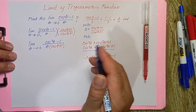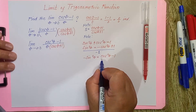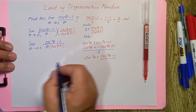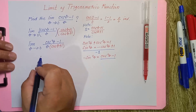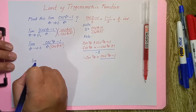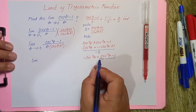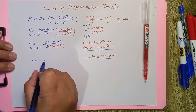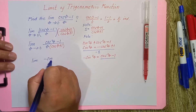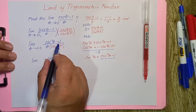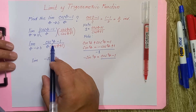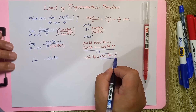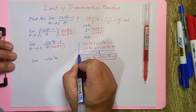After dividing by negative 1, this statement now matches our numerator. By the substitution method, we can replace cosine squared theta minus 1 with its equivalent: negative sine squared theta. So we have the limit of negative sine squared theta over the original denominator.